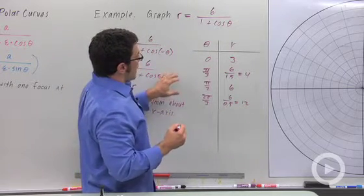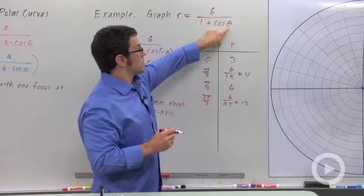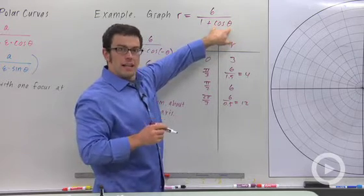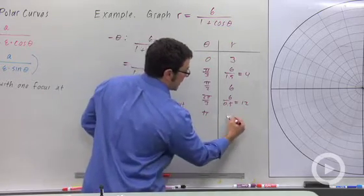Now, notice what happens when theta approaches pi. Cosine of pi is negative 1. So at pi, this is going to be undefined.